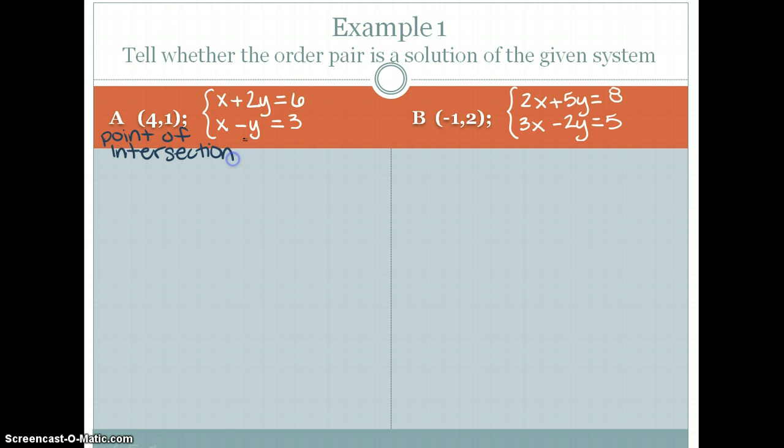Meaning that if you were to graph these two equations, they would cross at the point (4, 1). So to check, again, you simply need to just plug in the two. So again, the first equation is x plus 2y is equal to 6.